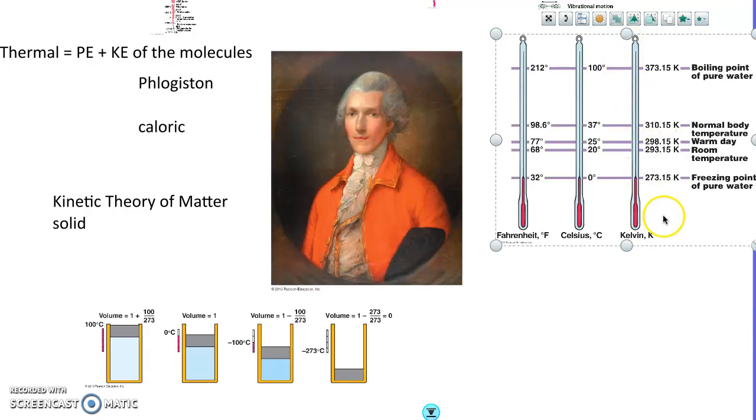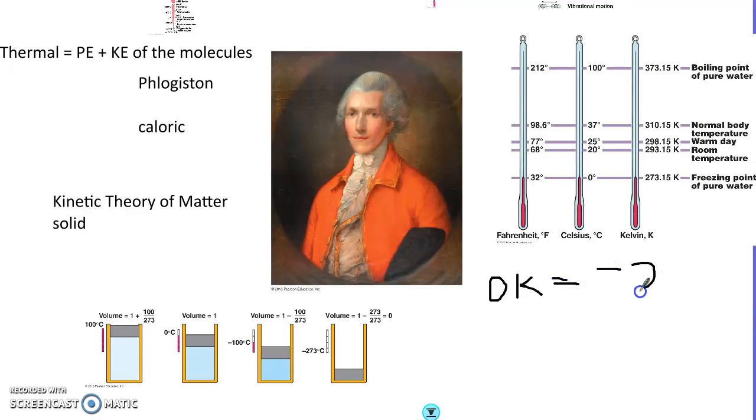And basically, if you're going to compare these, 0 Kelvin is absolute 0. And if you were to translate that into Celsius, it would be negative 273 degrees Celsius. And so, with Celsius, you can have negative numbers. With Fahrenheit, you can have negative numbers. But in Kelvin, there are no negative numbers, and that's one of the advantages of Kelvin.